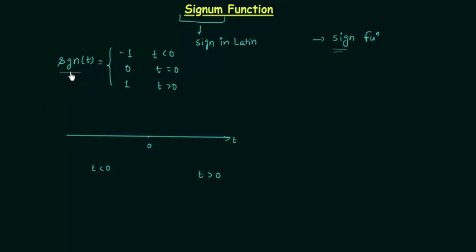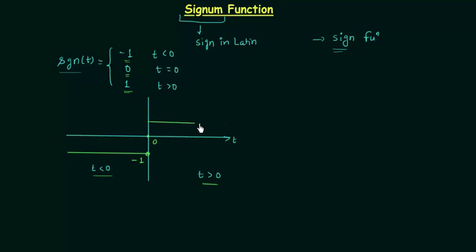Now we will draw the waveform of signum function using this definition. When t is negative, signum function is equal to minus 1. When t is equal to 0, signum function is also equal to 0. And when t is positive, signum function is equal to 1. So this is the complete plot of signum function, and you can see at t equal to 0, the plot is discontinuous.